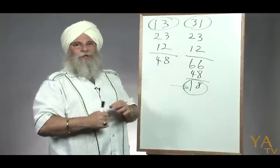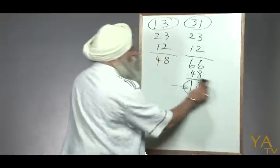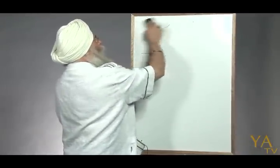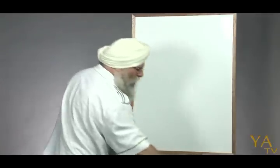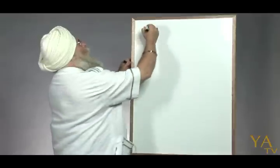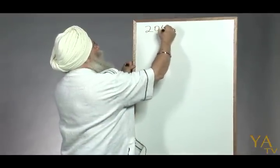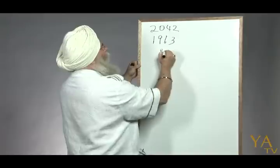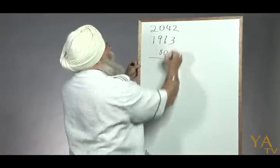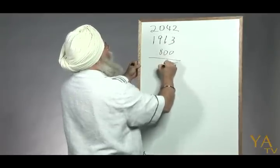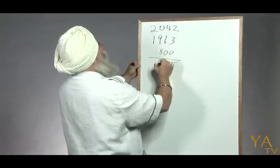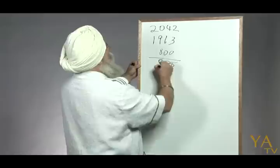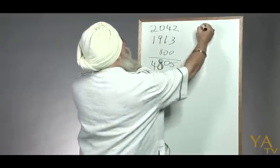Now let's pick a more difficult one. Sometimes we're just working with simple numbers like 0, 1, 1, 0, but sometimes we're working with more complicated numbers: 2042, 1963, and 800. This adds up to 5, 10, 18, and 4.